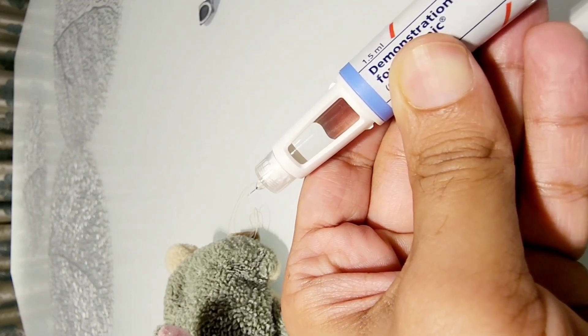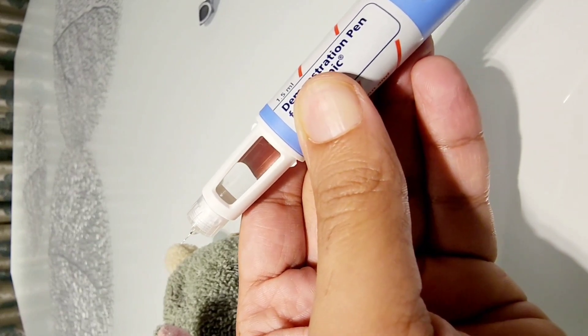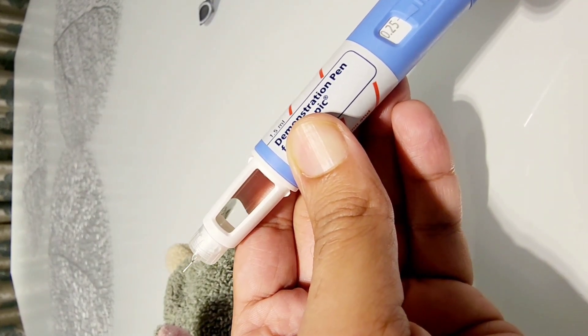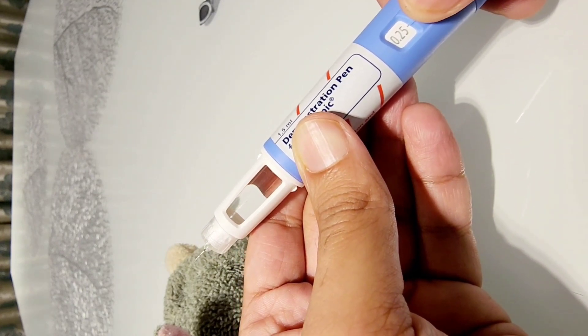If there is a drop coming up which suggests that the pen is working fine, then you dial all the way to the end. So when you dial all the way to the end, for example this is a demonstration pen for 0.25 milligrams.